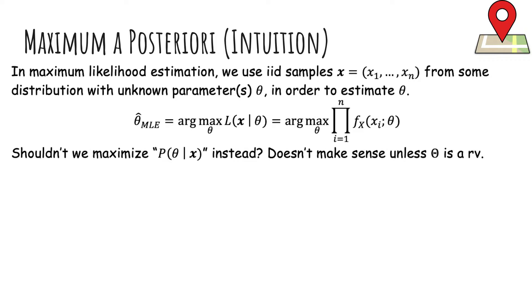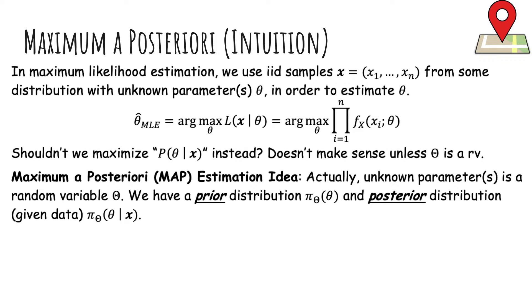But shouldn't we be maximizing the probability of theta given x instead? We're given the data x and we should be trying to find the probability of theta. This doesn't make sense unless theta is a random variable itself — what does it mean to talk about the probability of theta if theta is actually supposed to be fixed? In the Bayesian framework, when we do maximum a posteriori, we assume the unknown parameter is a random variable.